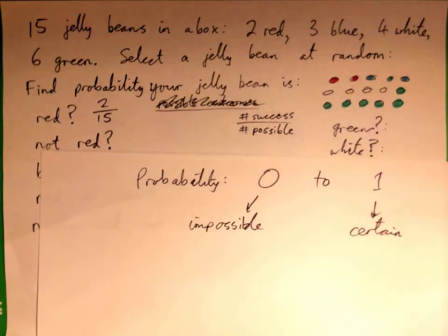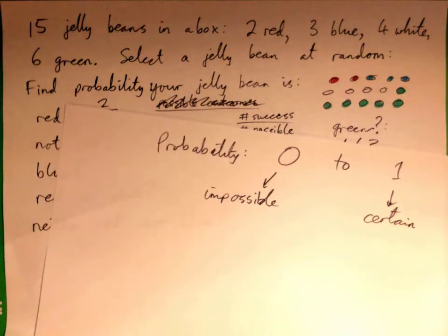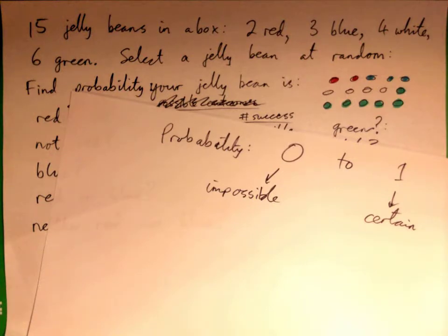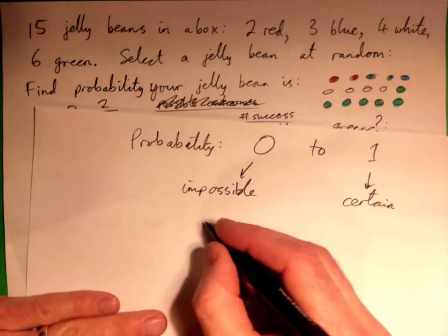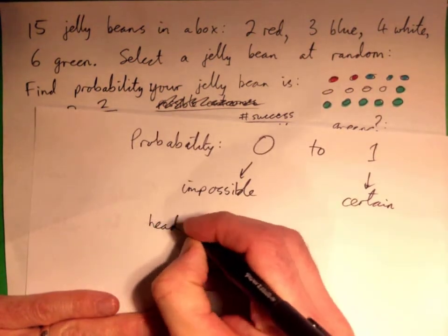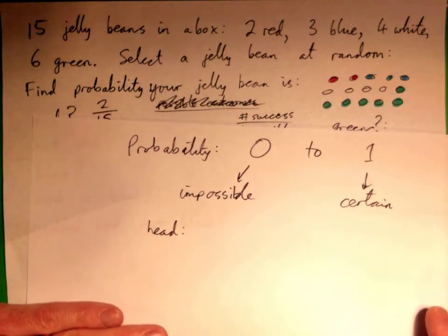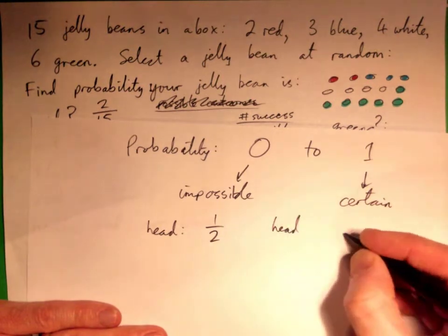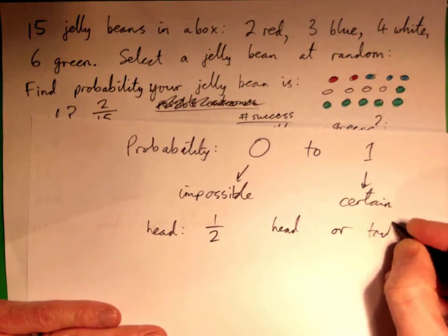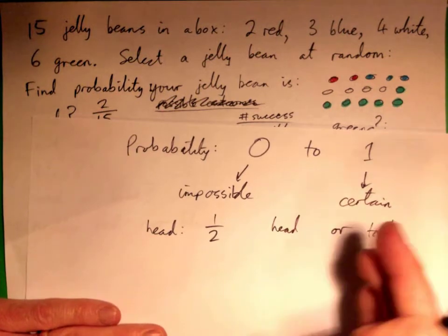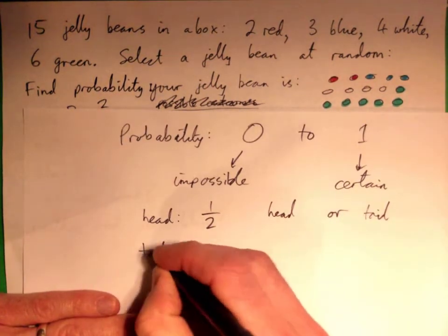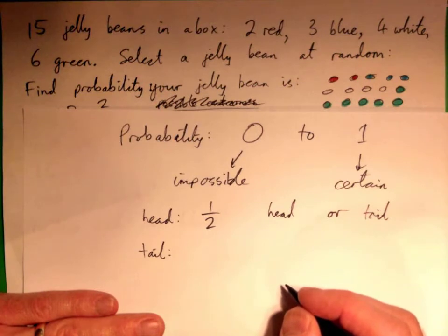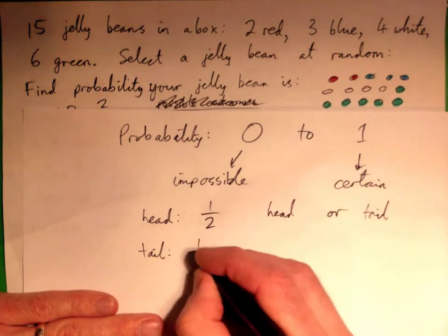We started talking about probability with tossing a coin, right, and the chances of getting a head is what? If you toss a coin. One out of two. Because there are two possible outcomes. There's head or tail, right?